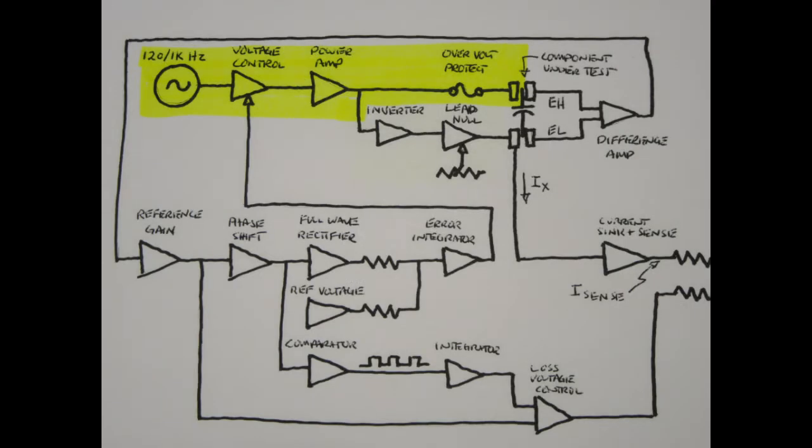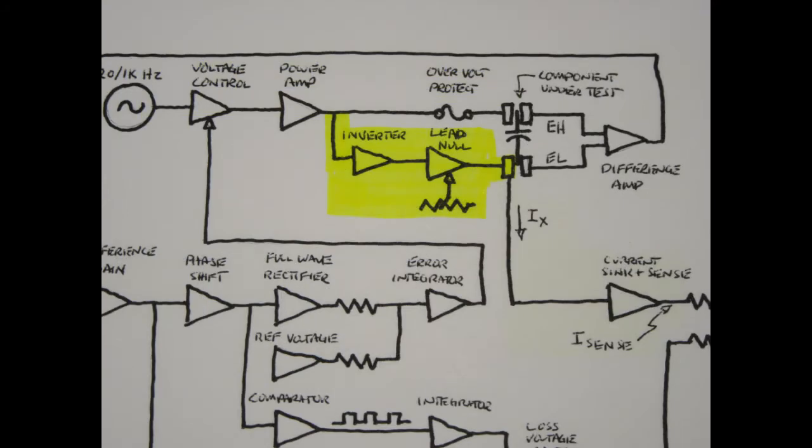The first part of the meter circuit generates a constant AC excitation signal at either 120 Hz or 1000 Hz, depending on the range selected by the user. The signal passes through a voltage control amplifier, then a power amplifier, and then an overvoltage protection circuit and a fuse, before being applied to one end of the component under test. This is the high side of the component, and is shown as EH on the diagram. An inverted copy of the same signal is applied to the opposite side, or low side of the component, shown as EL in the diagram, via a trim potentiometer and capacitor to null out any impedance of the test leads or component leads.